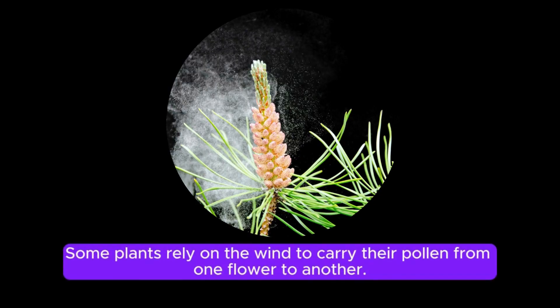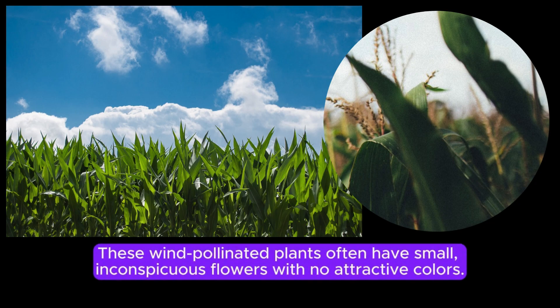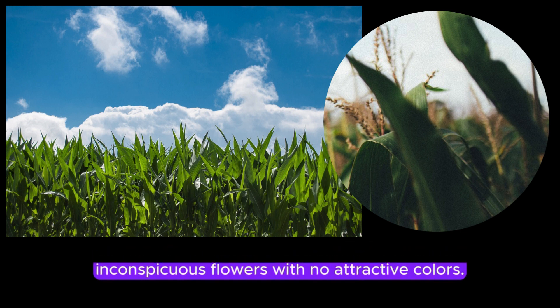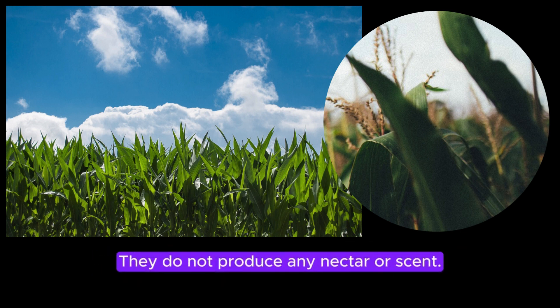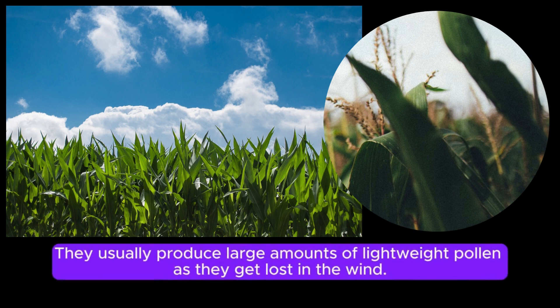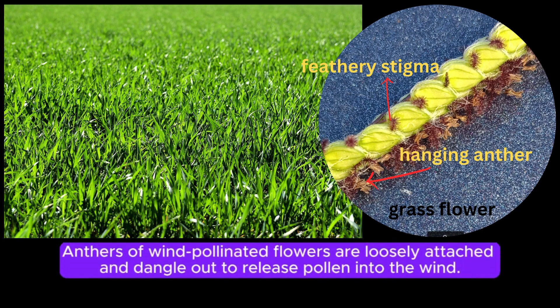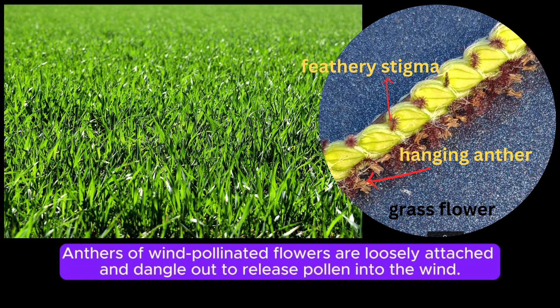Some plants rely on the wind to carry their pollen from one flower to another. These wind-pollinated plants often have small, inconspicuous flowers with no attractive colors. They do not produce any nectar or scent. They usually produce large amounts of lightweight pollen, as it gets lost in the wind.